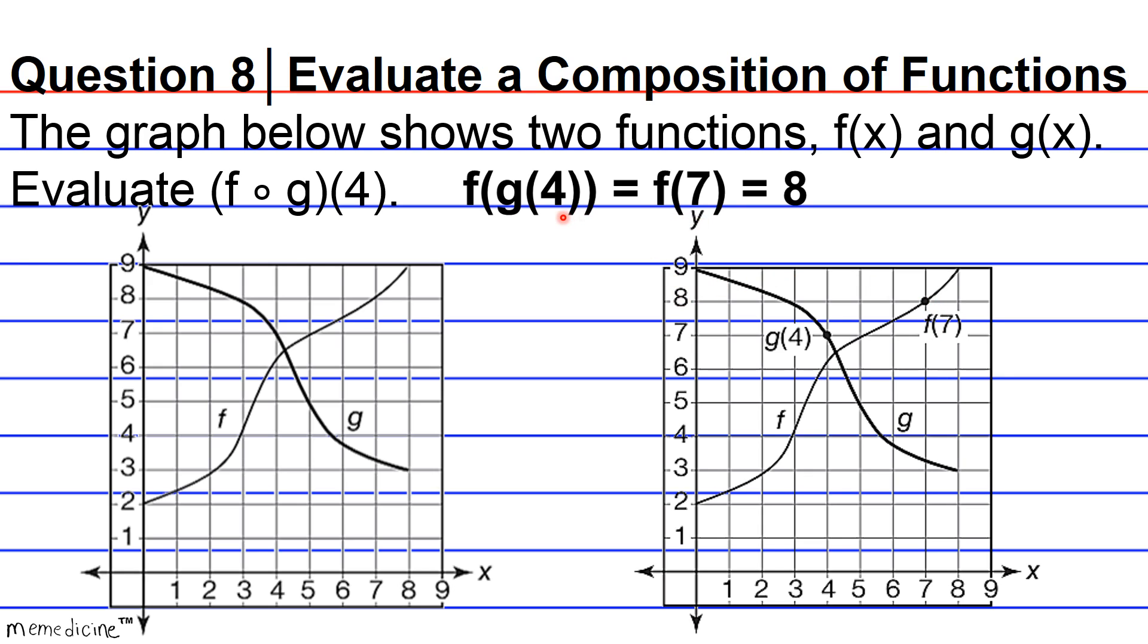So overall, f of g of 4, which is synonymous with f of 7, is equivalent to 8. Okay, and you can just double check the graph to make sure that what I'm telling you is correct. Thanks, and good luck studying.